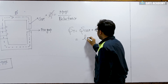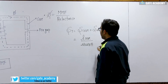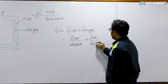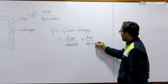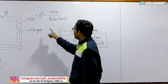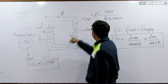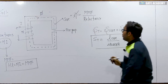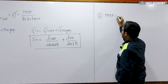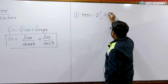The reluctance of the core equals the length of the core upon μ₀·μᵣ·A (area of cross-section), plus the length of the air gap upon μ₀. Because this is an air gap, the relative permeability equals 1, and it has the same area of cross-section. This is the total reluctance of the magnetic circuit. I am going to use the relation: MMF = N·I = φ × total reluctance.